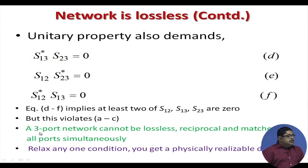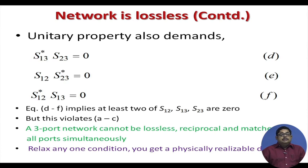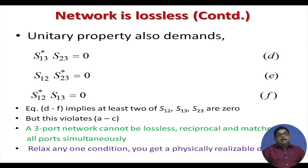We conclude that a three-port network cannot be simultaneously lossless, reciprocal, and matched at all ports. This is a fundamental result. So if we want a physically realizable three-port device, we must relax one of the three conditions.